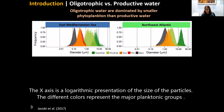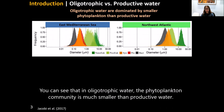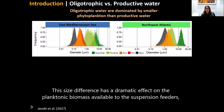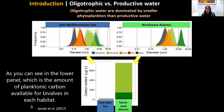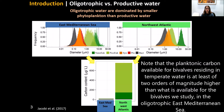The different colors represent the major planktonic groups. You can see that in the oligotrophic water the phytoplankton community is much smaller than in productive water. This size difference has a dramatic effect on the planktonic biomass available to the bivalves, as shown in the lower panel — the amount of planktonic carbon available for bivalves in each habitat. The planktonic carbon available in temperate water is at least two orders of magnitude higher than what is available in the oligotrophic East Mediterranean Sea.